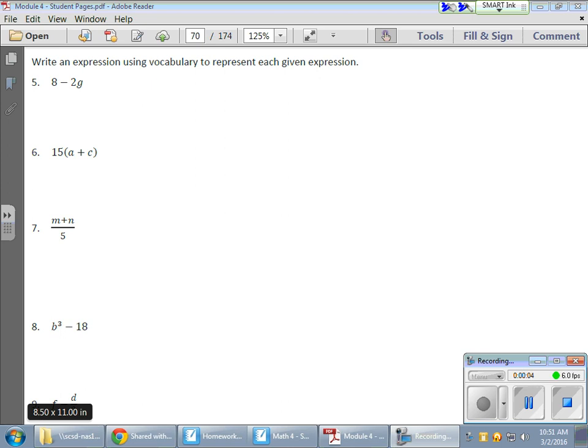In today's math lesson, we're writing expressions where letters stand for numbers. We're taking an expression and creating a word form using our vocabulary. I notice a subtraction symbol, so I need to subtract, and this guy here means I need to multiply. So we have 8 minus 2 times g.